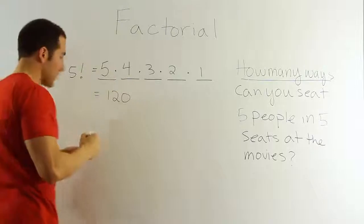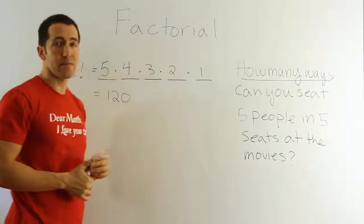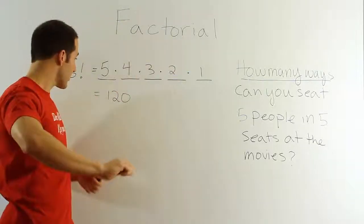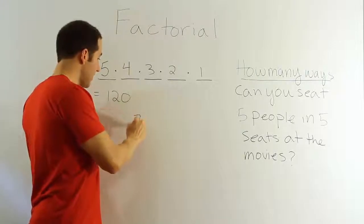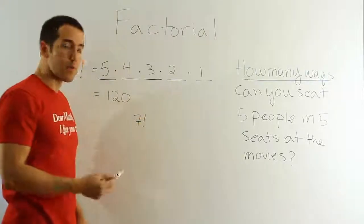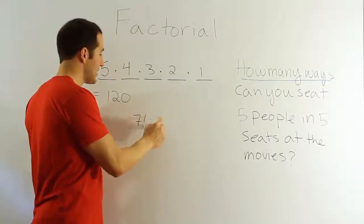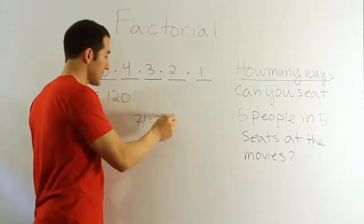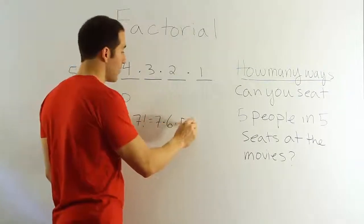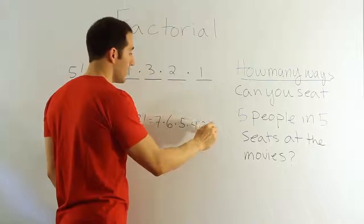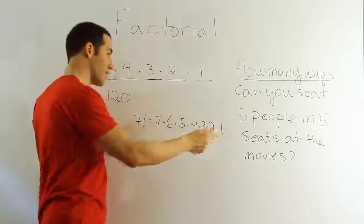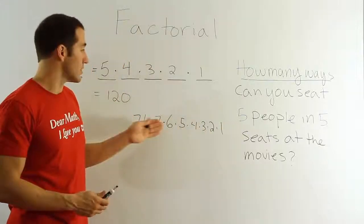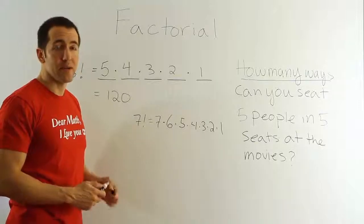But what matters mostly is that we understand that factorial is a special notation. So in other words, if you have something like seven factorial, what you want to remember is this is the same as seven times six times five times four times three times two times one. And afterwards, there's no special trick to it. You just multiply it all out to get the solution. And that's all it is.